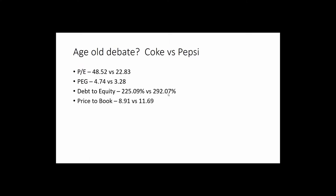For price-to-book — even though Coke's PE ratio is very high, the price-to-book value for Coke is actually less than Pepsi's. So it would seem that Coke is a better bargain there. Again, we have to take all these metrics into consideration.